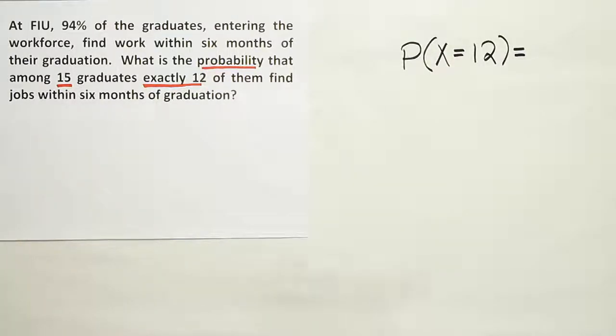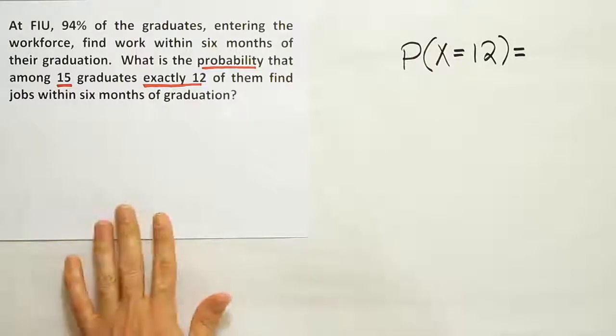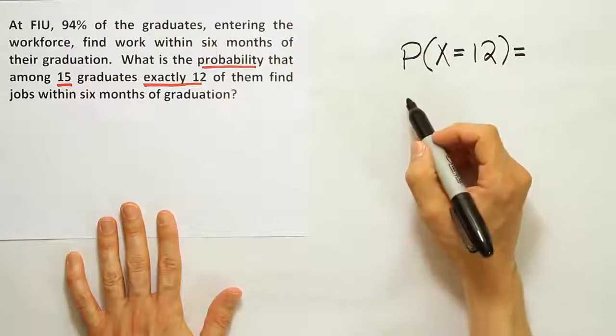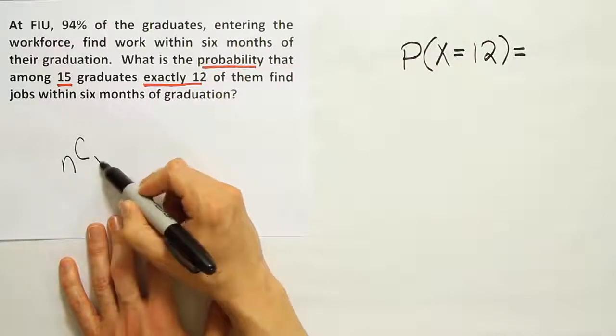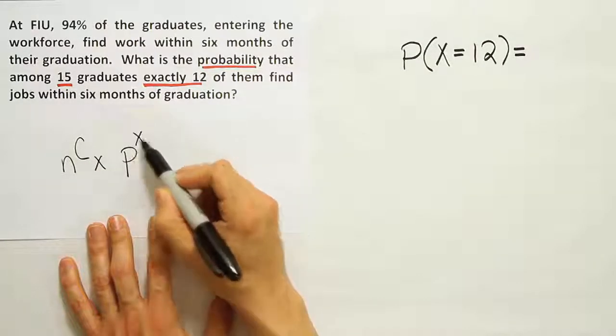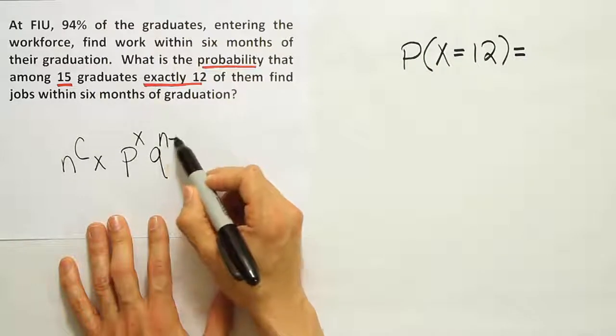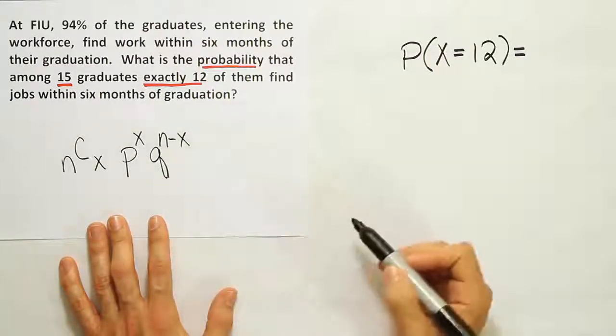Then from there, what we want to do is fill out the binomial formula. So the way the binomial formula works is we want to fill out this formula: we want to have n choose x, p to the x power, q to the n minus x.